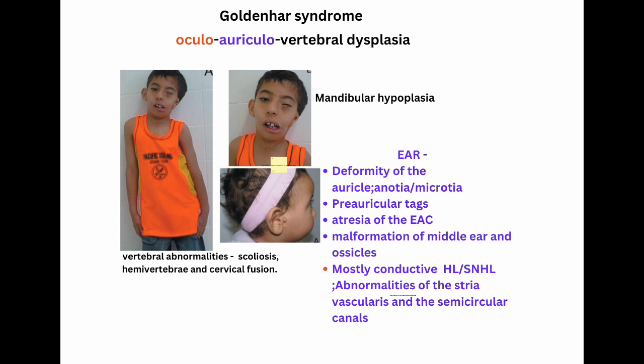There is also vertebral abnormality noted, including scoliosis, hemivertebra, and cervical fusion. There is also presence of problems with dentition, cleft lip and palate, renal abnormalities, and congenital heart disease. The classical triad consists of mandibular hypoplasia, ocular and auricular malformations, and vertebral abnormalities.